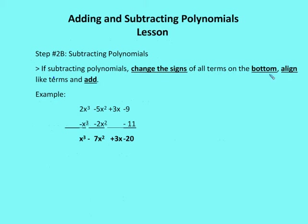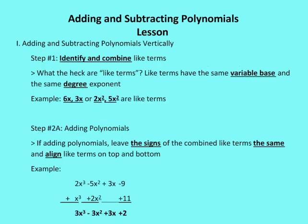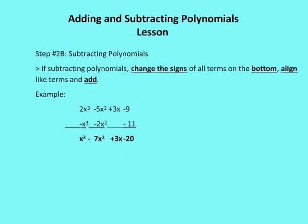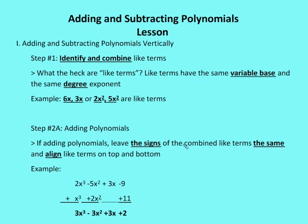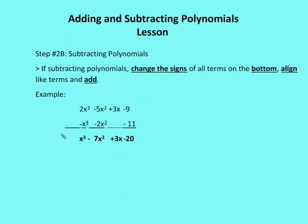Now if we're subtracting polynomials, we can do this one of two ways. We can change the signs of all the terms in the bottom, align the like terms, and then add — or we can just subtract. I prefer to change the signs of the terms and add. So I've changed the signs of each of the terms, and now instead of subtracting, I'm just adding.